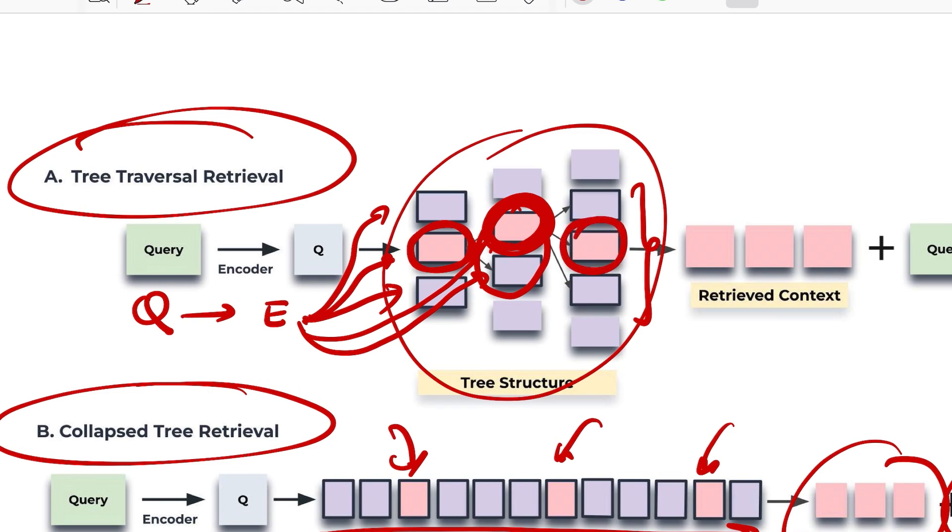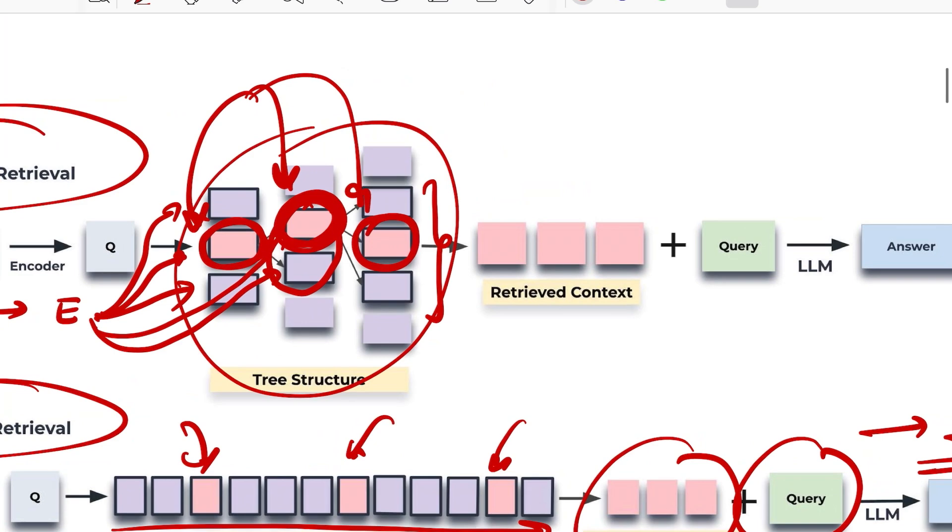Then this is your search space where you need to do a second level of matching for the query. You take the query embedding, match it with this and this. Let's say this is the one that you pick. Post this, your search space again is now just these three elements. You do the same step again and you have one node at the bottom most layer. So in total you have chosen three nodes.